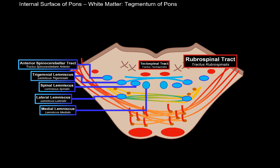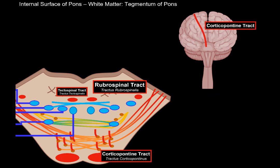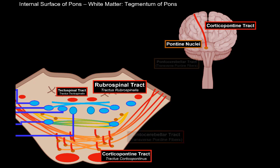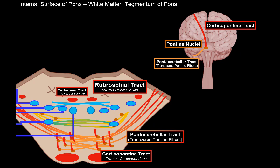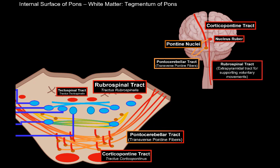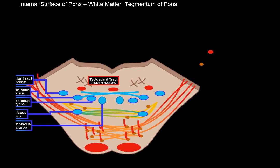The next descending tract is the rubrospinal tract. Fibers from the corticopontine tract descend to synapse with the pontine nuclei, go to the cerebellum as the pontocerebellar tract, then travel to the red nucleus of the midbrain as the cerebellorubral tract, and descend as the rubrospinal tract. These fibers don't originate from the pyramidal cells of the primary motor cortex, so they're extrapyramidal — they don't initiate movement but support and coordinate voluntary movements.